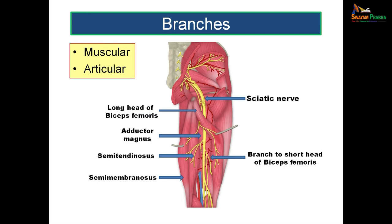The sciatic nerve gives muscular and articular branches. It gives an articular branch to the posterior surface of the capsule of the hip joint. It also gives muscular branches to the muscles of the back of the thigh — the hamstring muscles — which are formed by four muscles: semitendinosus, semimembranosus, adductor magnus ischial part, and long head of biceps femoris. The sciatic nerve also supplies the short head of biceps femoris, which is the non-hamstring part. The branches supplying the hamstring muscles arise from the tibial component and from the medial side of the sciatic nerve.